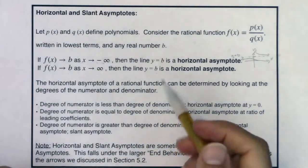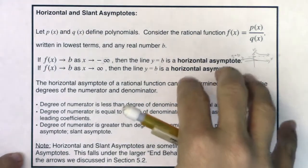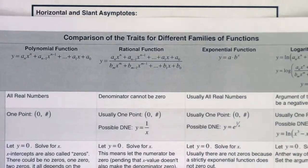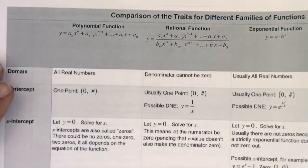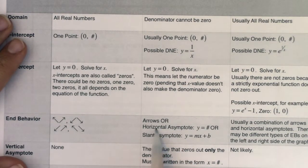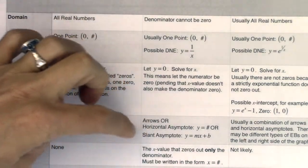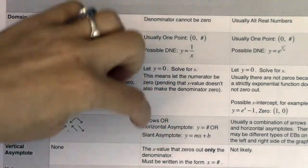Because horizontal asymptotes are lines — horizontal lines — they're going to have the equation y equals a number. This is one option for end behavior. I want to go back to our trait table, because this is going to be super important for rational functions. When talking about end behavior, you will either have arrows, or a horizontal asymptote y equaling some number, or a slant asymptote y equaling mx plus b. I'm going to show you in this example how to distinguish which case you're in. Those are your three options and you can't have more than one — it's either a slant, or a horizontal, or arrows. It can't be some of each.